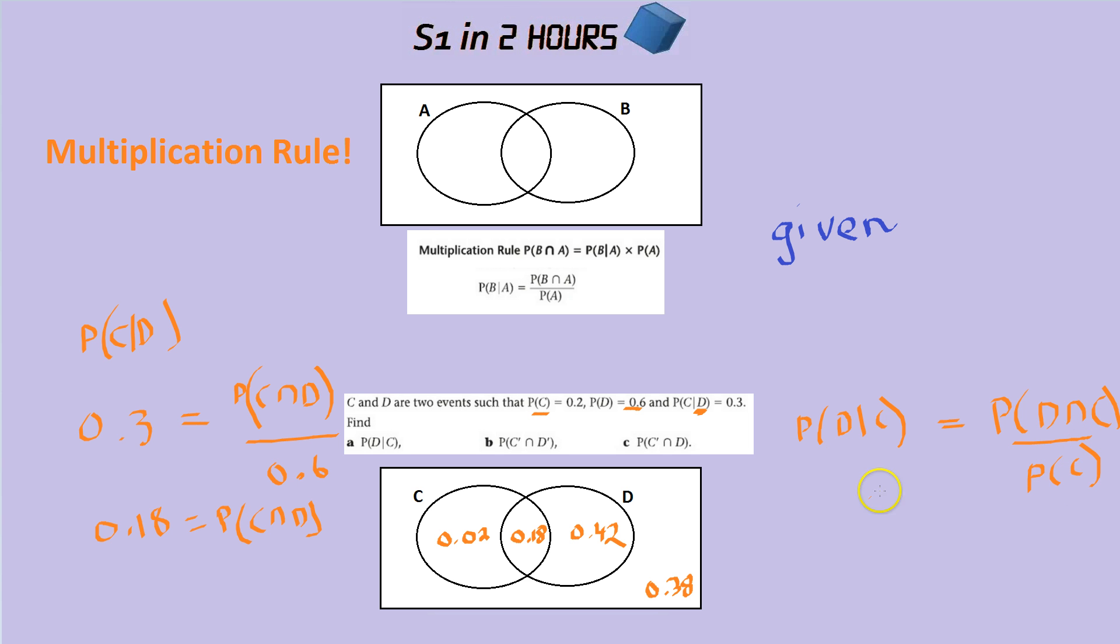Okay, let's work it out. So that's the overlap we know is 0.18. And we know the probability of C overall is 0.20. Notice it's not 0.02, that's only C. But this is the whole C bubble, is 0.2. It tells you in the question as well. If you work that out, I believe that would be 0.9. Okay, that's part A done.